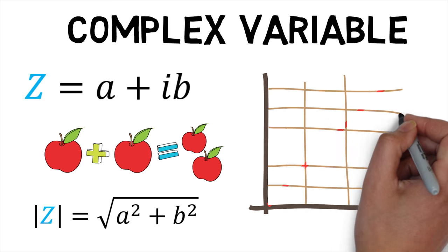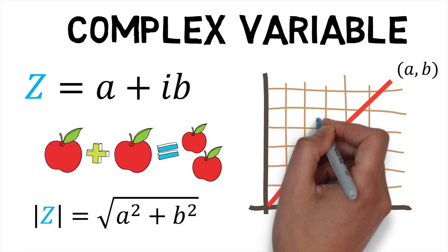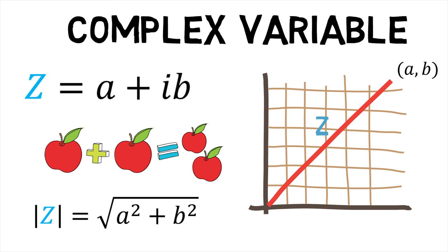A complex variable may also be graphed as a vector from the origin to the point a comma b in a rectangular coordinate system, its modulus corresponding to the vector's length, called an Argand diagram, with a and b representing the real and imaginary part of the complex variable respectively.